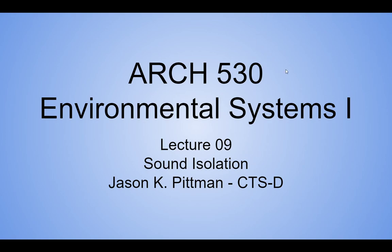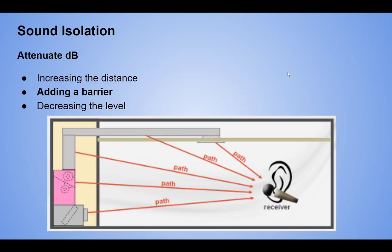You're ready to learn about some sound isolation — isolate your roommates from yourself, get some quiet time. Remember when we're attenuating dB, we can increase the distance, add a barrier, or decrease the level. When we were looking at background noise, we looked at two paths: the path of the ductwork and the path of the diffuser.